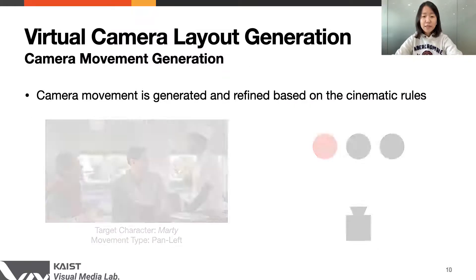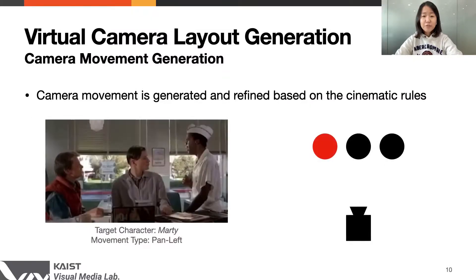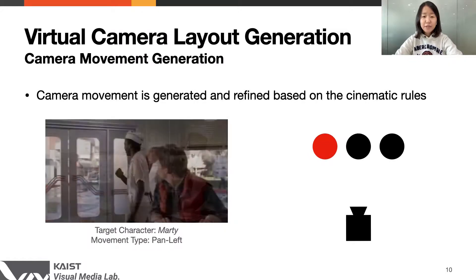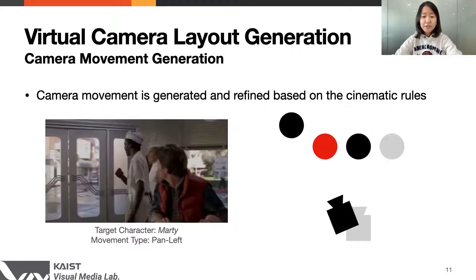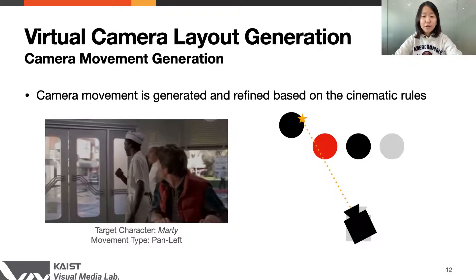Once the framing is determined, the camera movement is generated by interpolating the camera placements at the start and end keyframes of the shot. However, the initial placement often does not satisfy the constraints of the camera movement rules. Thus, we recalculate the position at the end frame or add keyframes in the middle so that the camera can correctly follow the conventional rules.